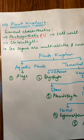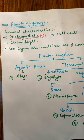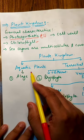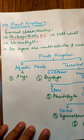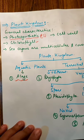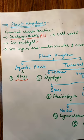So now let's see the outline of kingdom Plantae. Kingdom Plantae can be divided into two different categories on the basis of their habitat. First are aquatic plants, which are present in the aquatic medium or in water, and the second are terrestrial plants. In aquatic plants, there is one division — the first division of the plant kingdom — that is known as algae, which is present in the aquatic medium.